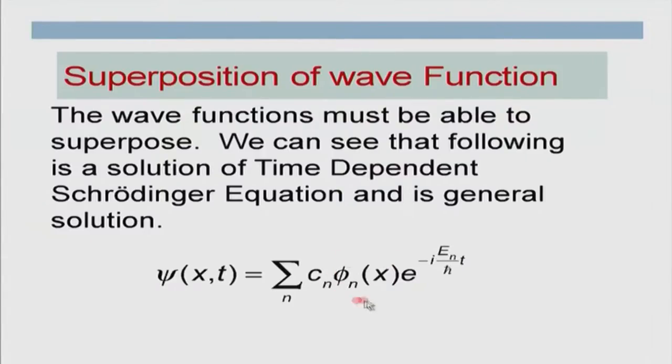In principle, a superposition of these wave functions is also allowed. Therefore, a particle could be in a state which is a resultant of superposition of wave functions. The actual wave function is whatever we obtain as a solution of the time-independent Schrödinger equation multiplied by the time-dependent part, which is e raised to the power minus i·E·t over ℏ. This general equation applies even if the problem is different.